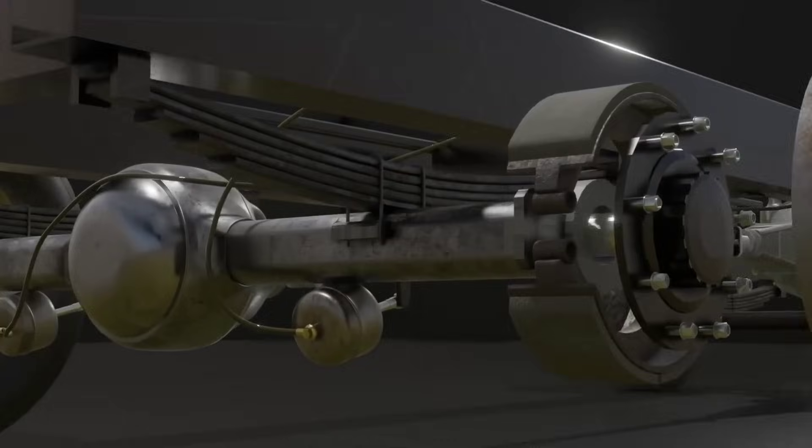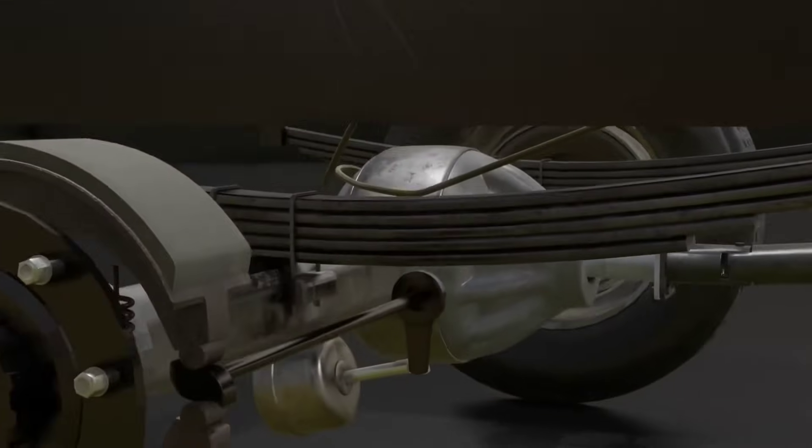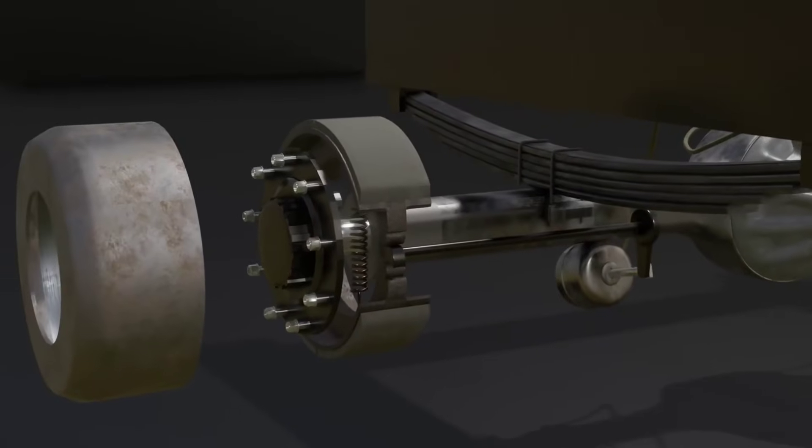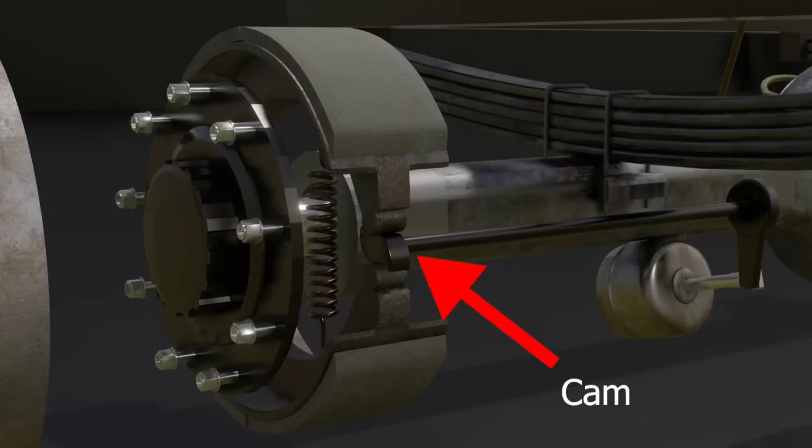For example, on this truck we see a set of drum brakes where at the end of the brake shoe there is a cam. If this cam rotates, the cam mold will push the two brake shoes in opposite directions so that the brake can activate.